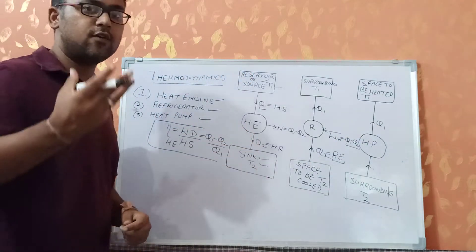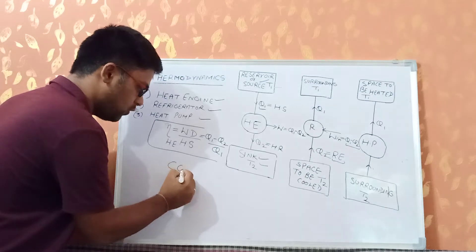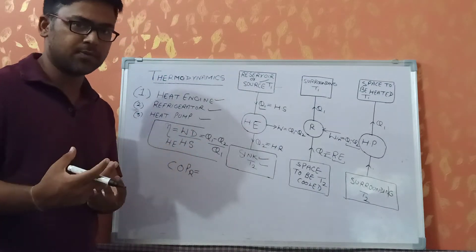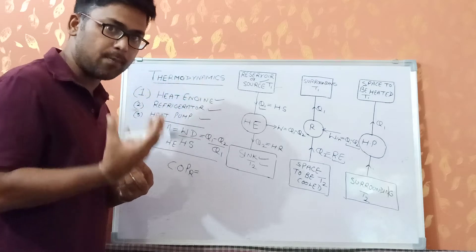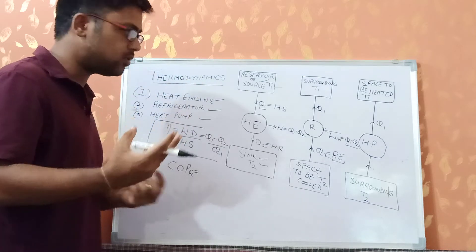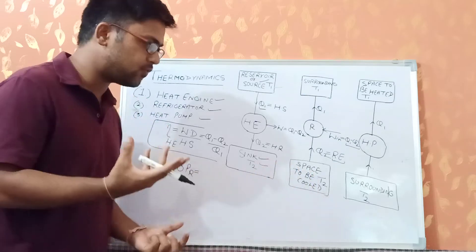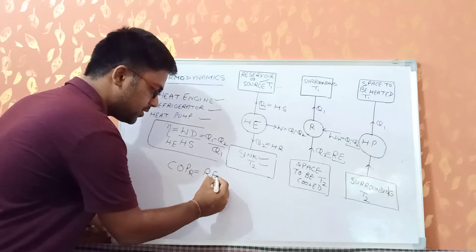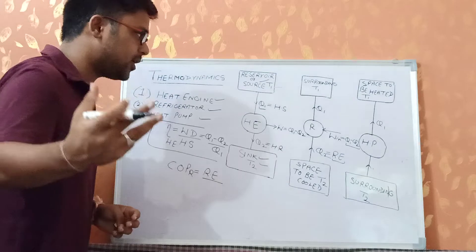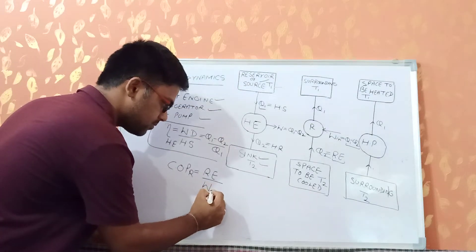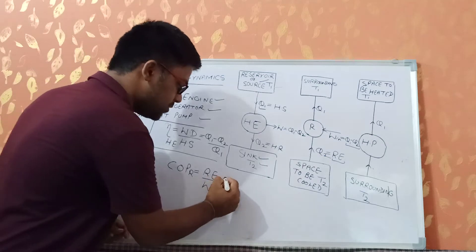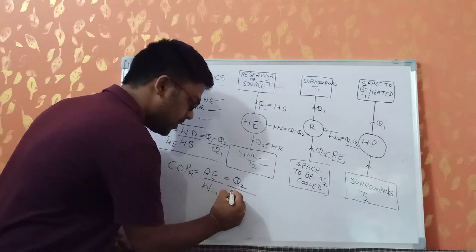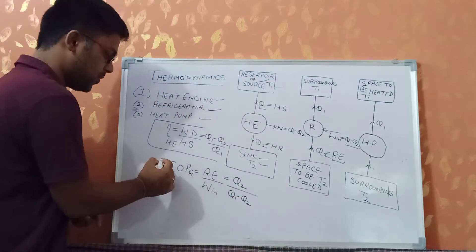Now we find the COP — Coefficient of Performance — of the refrigerator. COP of the refrigerator equals refrigeration effect upon work input, in simple terms: what we want divided by what we pay for it. What we want is to cool the space (refrigeration effect Q2), and what we pay is the work input W equals Q1 minus Q2. So COP of refrigerator equals Q2 upon Q1 minus Q2.